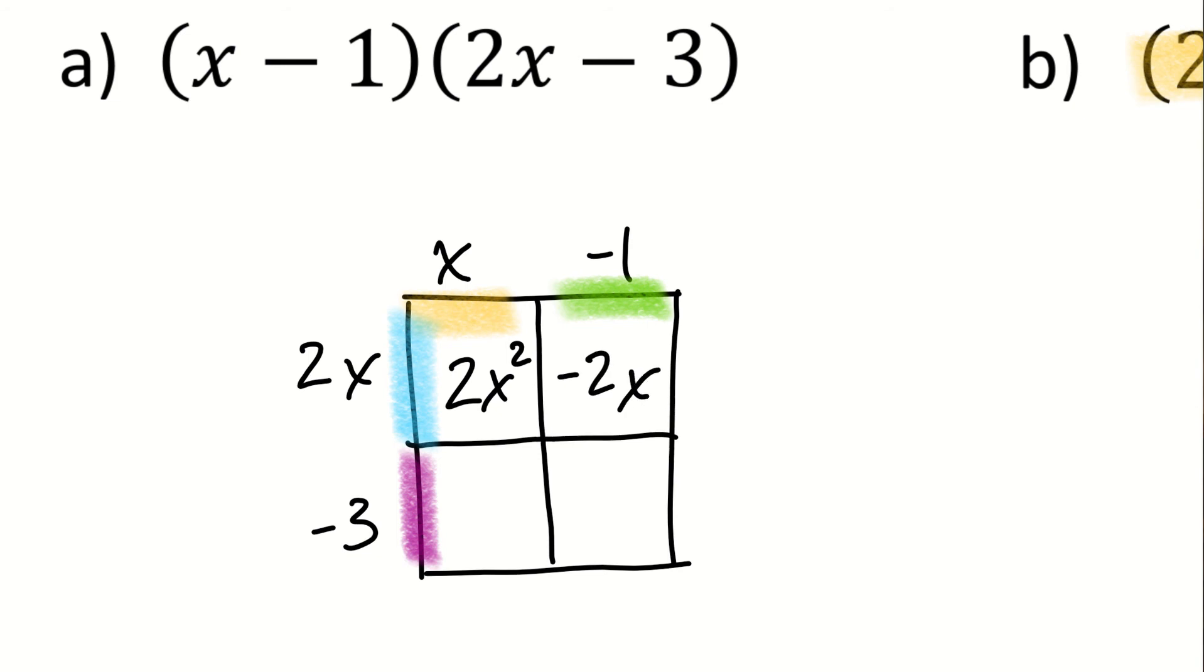Now we'll go down to the bottom. This yellow-orange x times a negative 3 is negative 3x. That doesn't look like a negative 3x the way I wanted it to. Negative 3x. And then finally, negative 3 purple times negative 1 green gives me a positive 3.